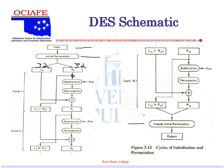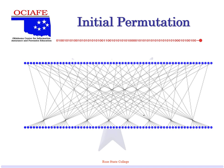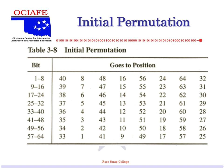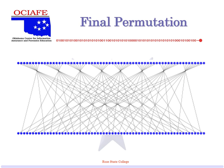Here's the initial permutation — it's hard-coded. A certain bit goes to a certain place: bit one goes to bit 40, bit two goes to bit 8, bit three goes to bit 48, and so on. There's actually a pattern there. The final permutation is pretty much upside down — we're undoing it. So that's the initial and the final permutation. For the homework assignment you actually have to do the initial permutation, but go by the numbers given on the assignment.